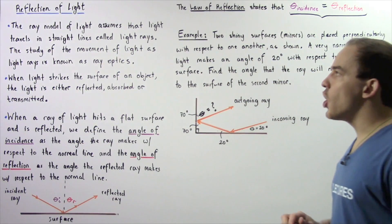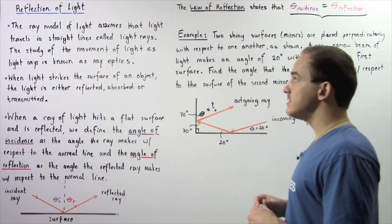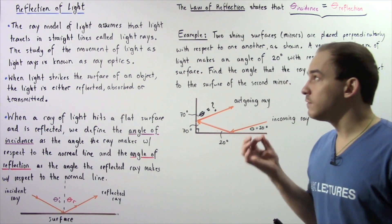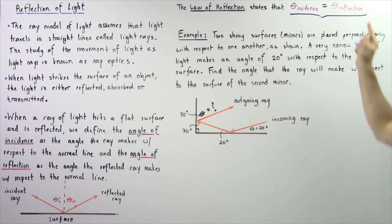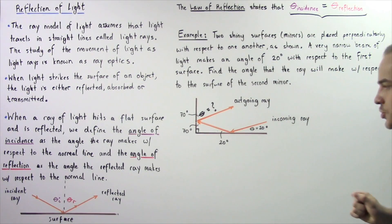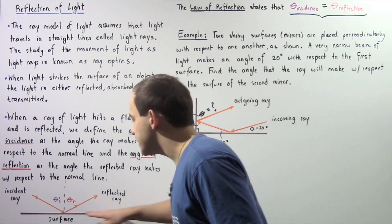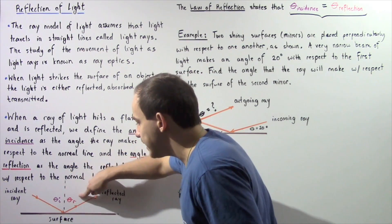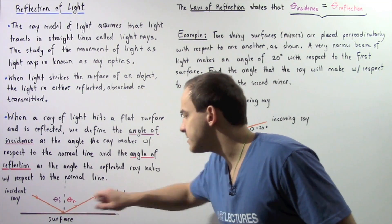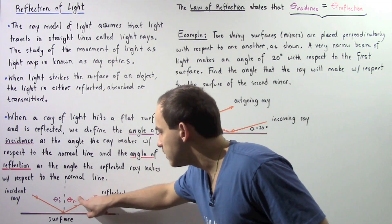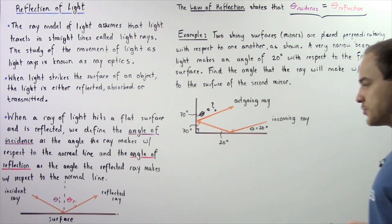The law of reflection states that any time light reflects off of a flat surface, the angle of incidence will equal the angle of reflection. So these two angles will be equal. If we assume this is a flat surface and these two angles are equal, that implies the complementary angles are also equal, because the sum of the angle of incidence and its complement is 90 degrees, since the normal line is perpendicular to the surface.